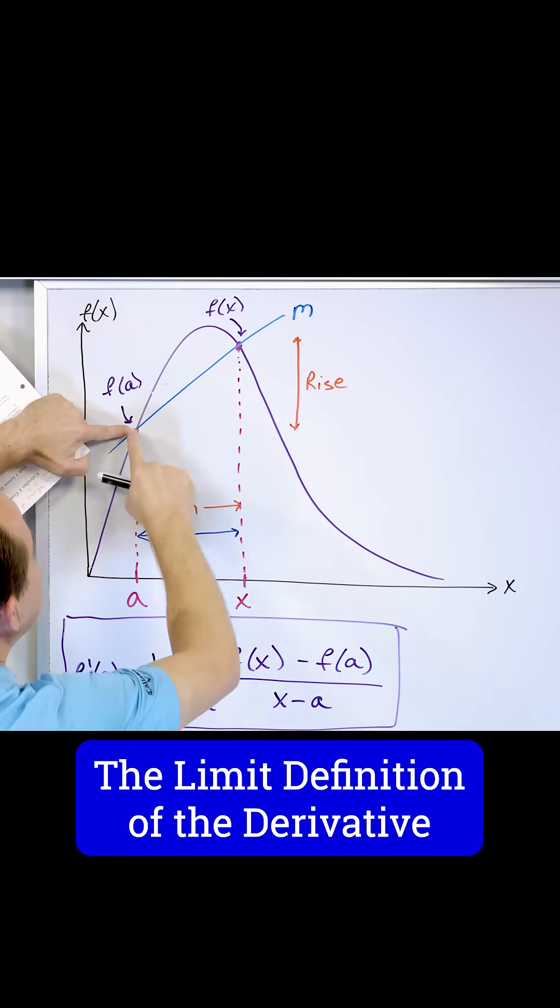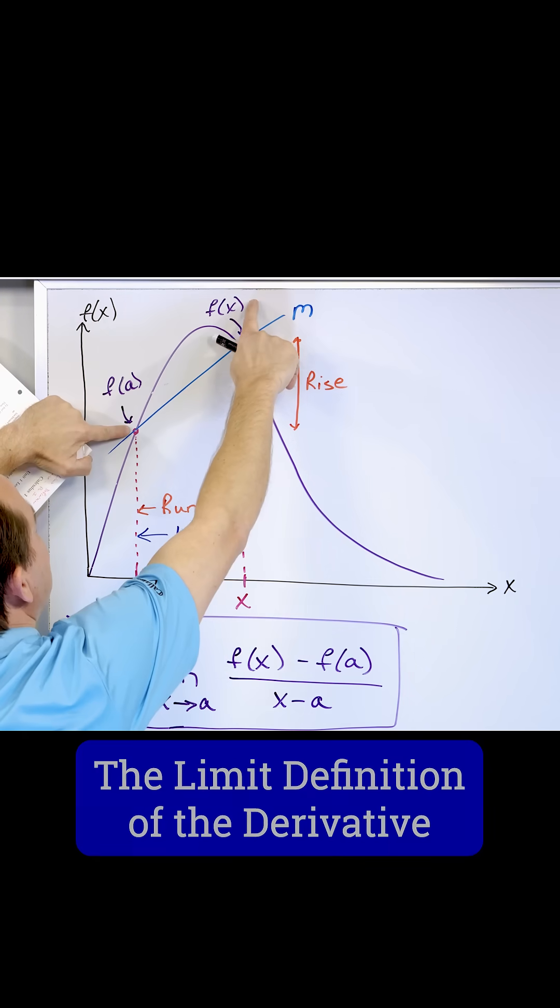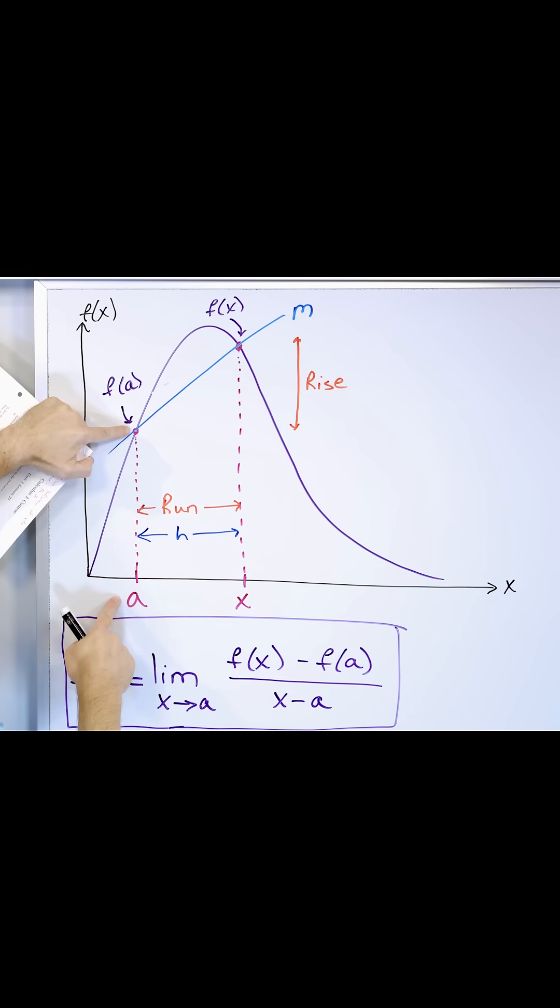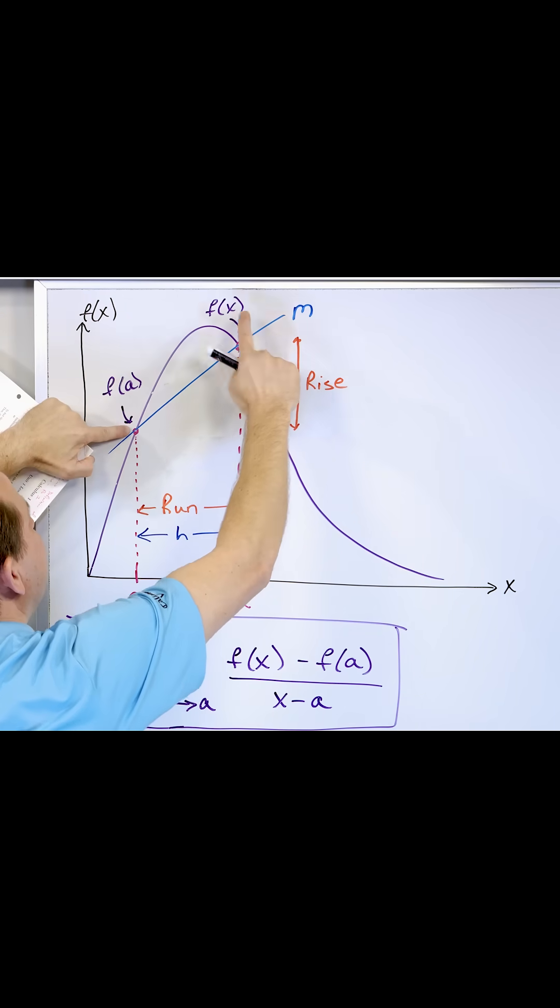You use this point and a point far away, which we call f(x) because this is x and this is the point of interest a. These are the two points there.